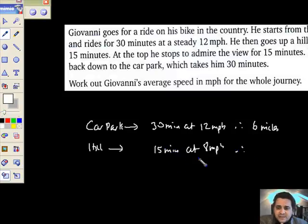Alright then, so 15 minutes at 8 miles per hour - we're only going for a quarter an hour, we go for a quarter of the distance, therefore we've got 2 miles.